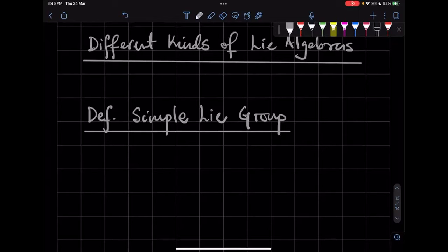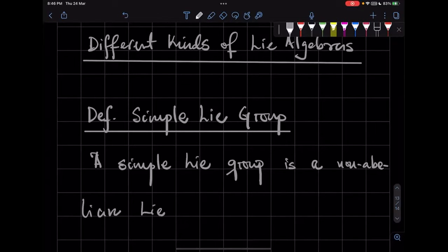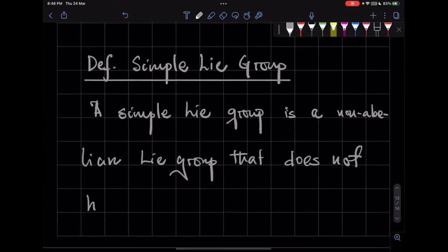So, okay. So for Lie groups, a simple Lie group is a non-abelian Lie group that does not have a non-trivial, that is non-zero, a non-trivial normal Lie subgroup.